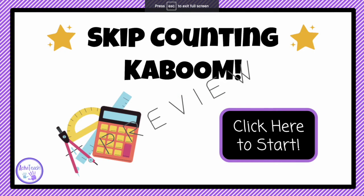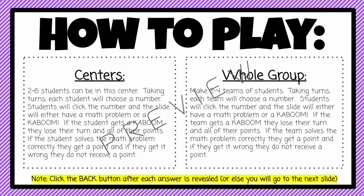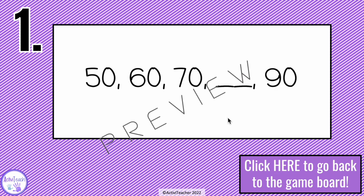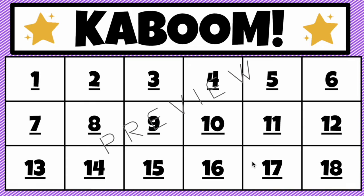The last activity is a skip counting Kaboom game, because my students absolutely love Kaboom. You will make two to four teams of students taking turns — each team chooses a number, clicks it, and the slide will either show a math problem or a Kaboom. If the team gets a Kaboom, they lose their turn. If they solve the math problem correctly, they get a point; if they get it wrong, they do not. For example, the answer to one problem is 80.